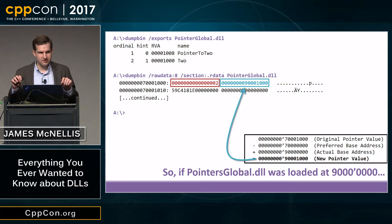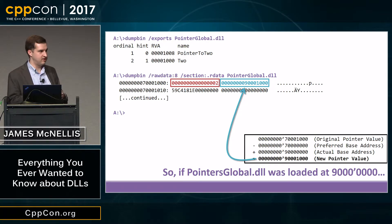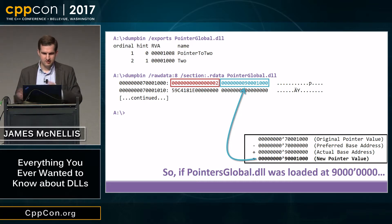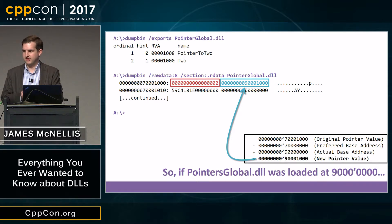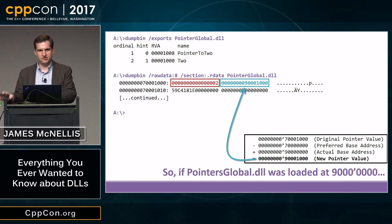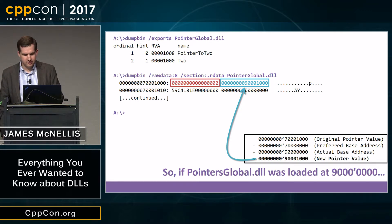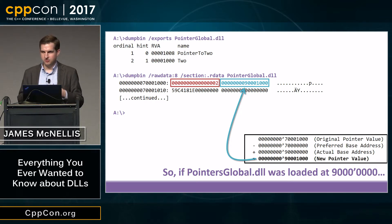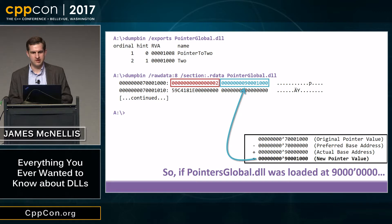Running 'dumpbin /relocations' shows the relocation entry: there's a pointer located 8 bytes from the start of the section beginning at RVA 0x1000. The loader updates each pointer in the relocation table by subtracting the preferred base address and adding the actual base address. The reason pointers contain preferred-base-address values rather than RVAs is historical: long ago, the loader would try to load DLLs at their preferred base and only fall back to relocating if necessary. Nowadays, ASLR (Address Space Layout Randomization) means the loader always loads DLLs at random addresses so attackers can't predict where library code is located.